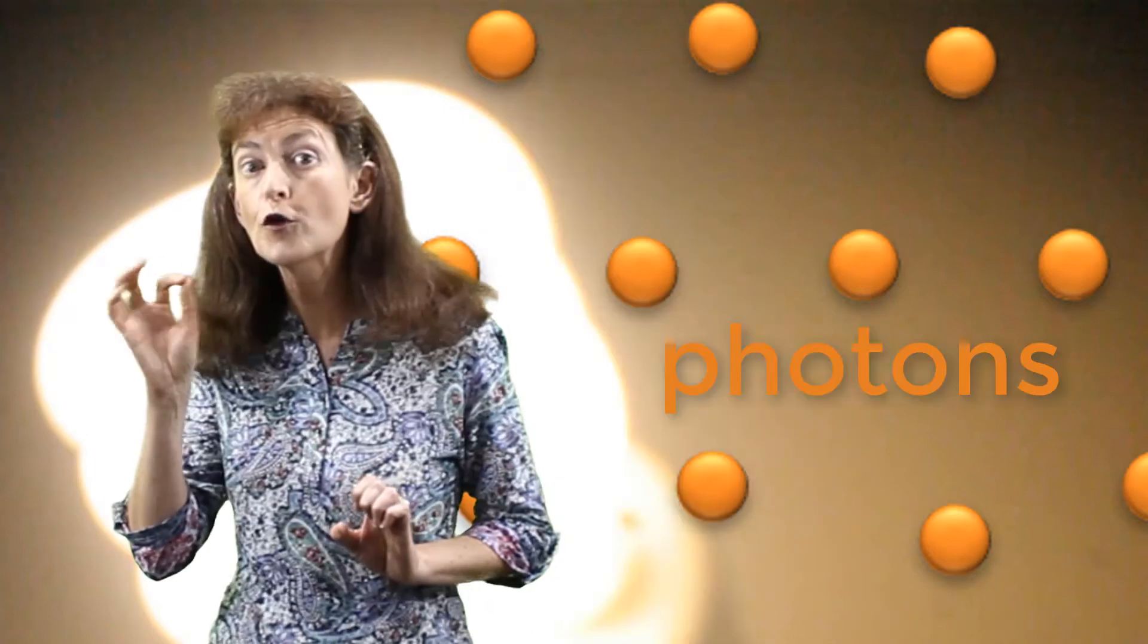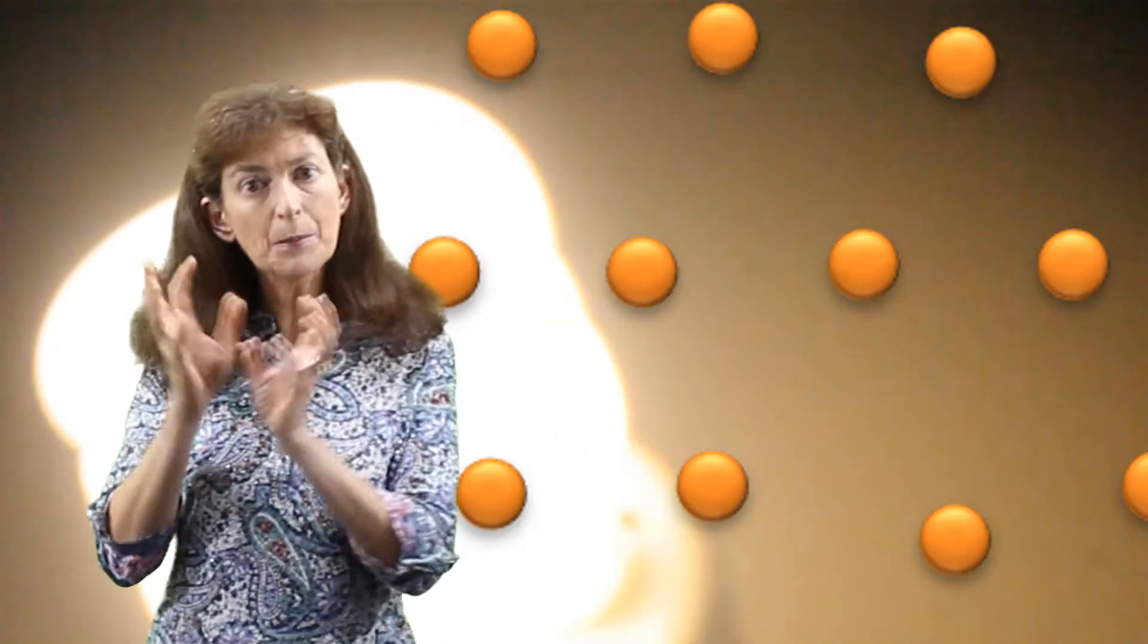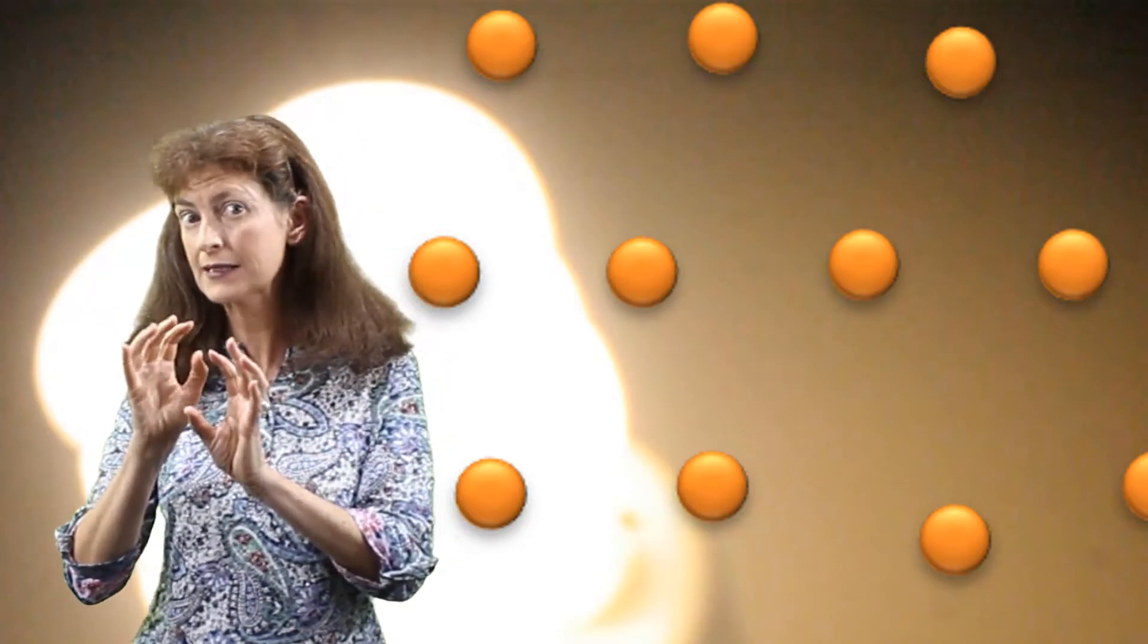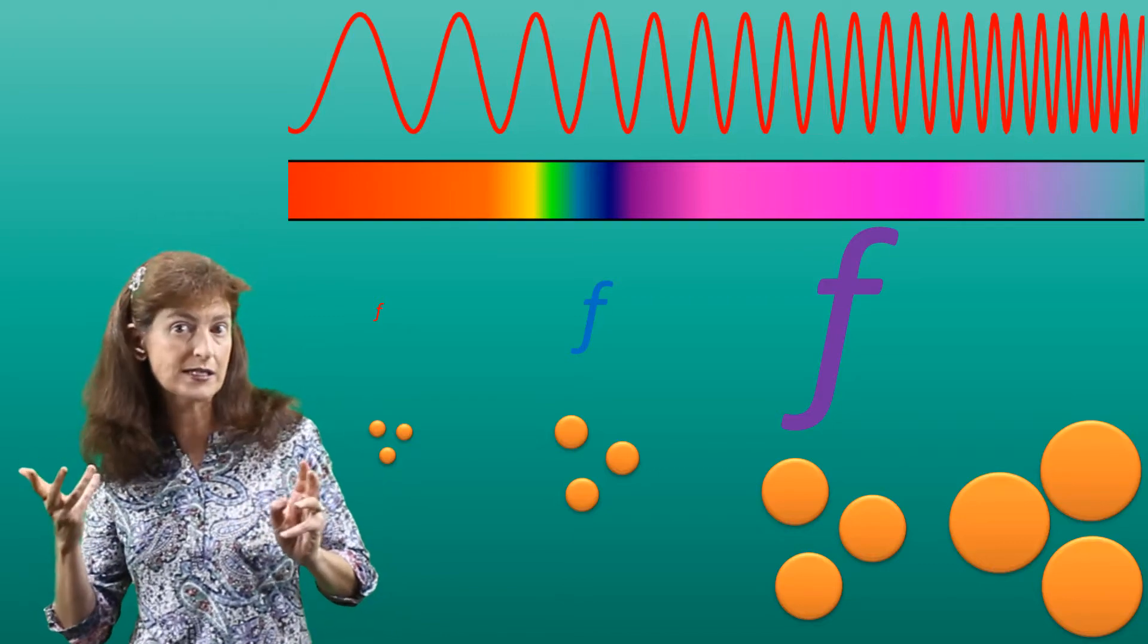Einstein suggested that light is made up of particles called photons. Now these are very strange particles because they don't have any mass. They just consist of little packets of energy. And how much energy is inside the packet depends upon the color of the light, the frequency of the light.